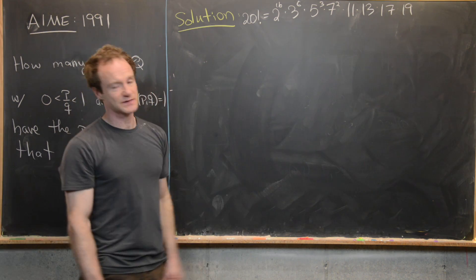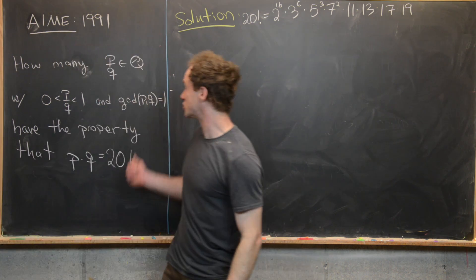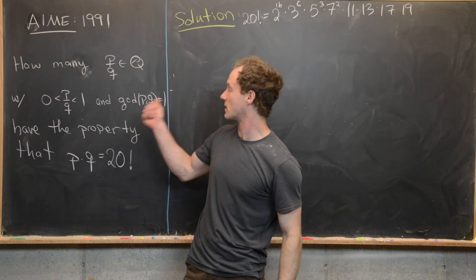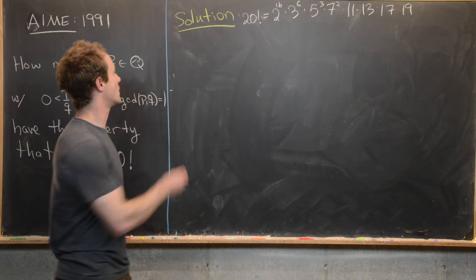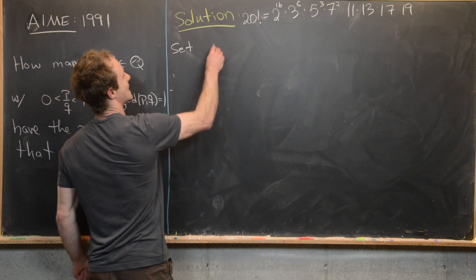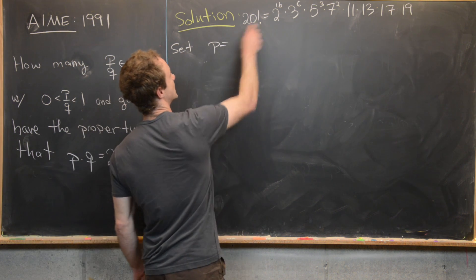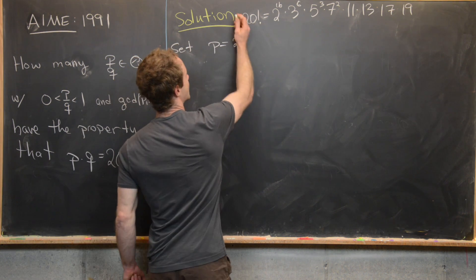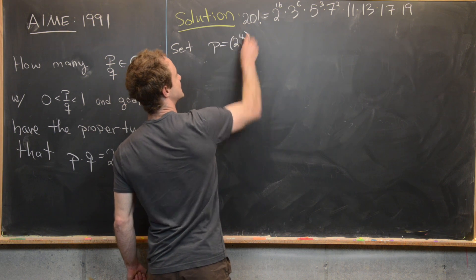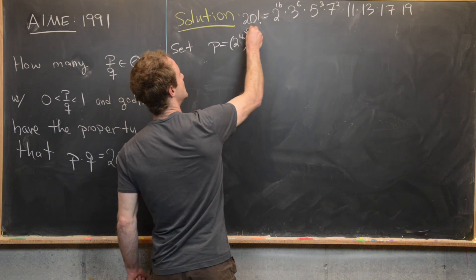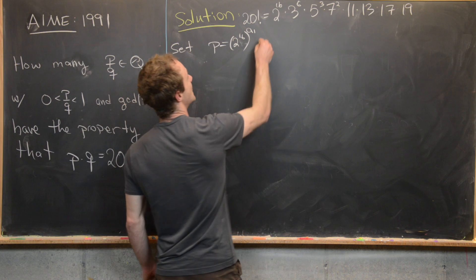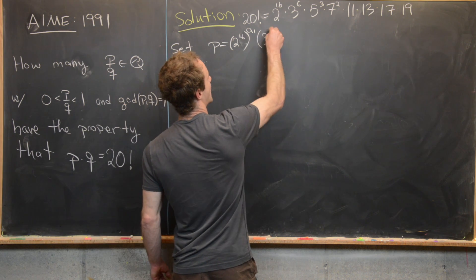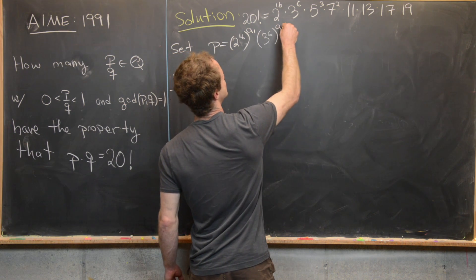Now we want to use this prime factorization to construct a rational number in lowest terms that has this property. So we'll set P equal to the following. It'll look a lot like 20 factorial. So it'll be 2 to the 16, but then we're going to include an extra exponent here, A1. And then we're going to do that for all of these primes. So 3 to the 6 to the A2, 5 to the 3 to the A3.